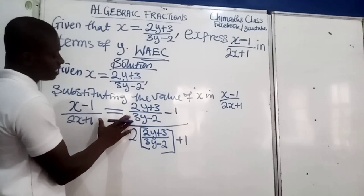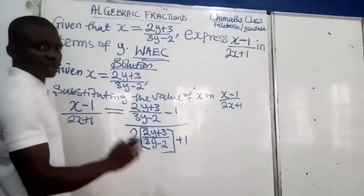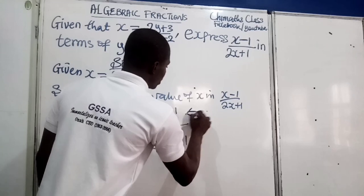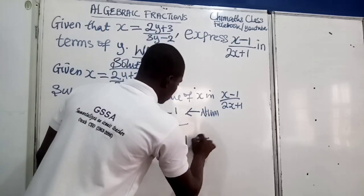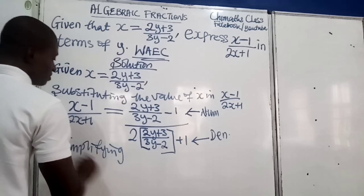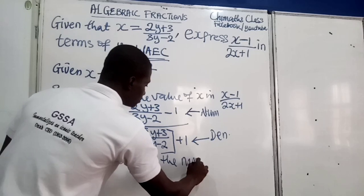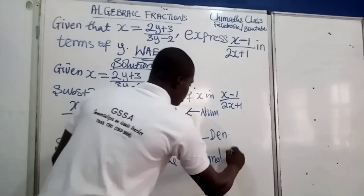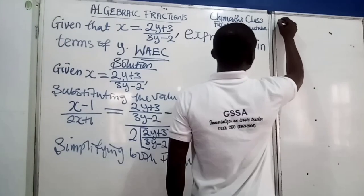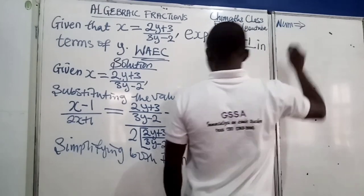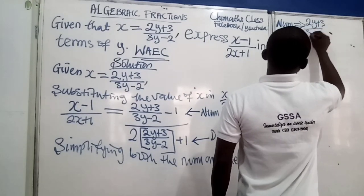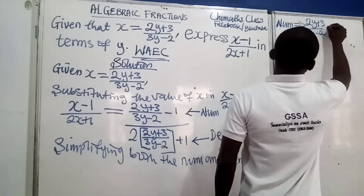We are going to simplify the numerator and denominator separately and then later join them together with a division sign. So, from the numerator, we have 2y plus 3 over 3y minus 2, minus 1.